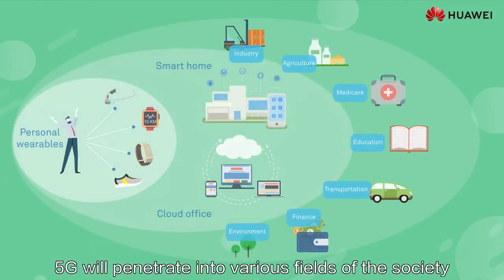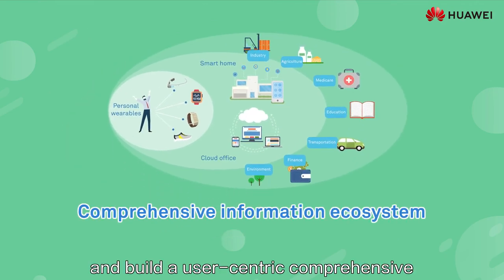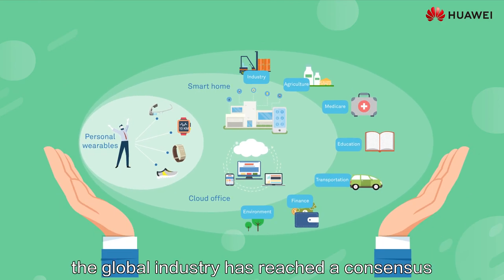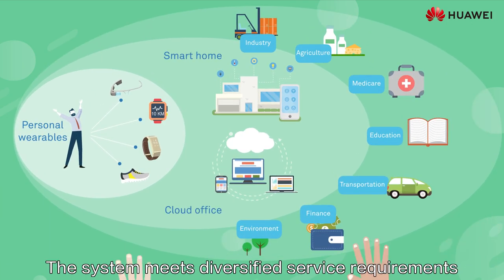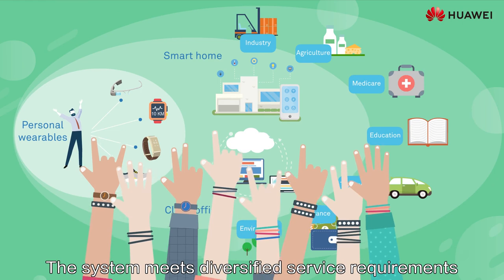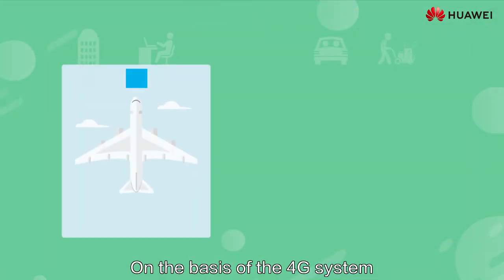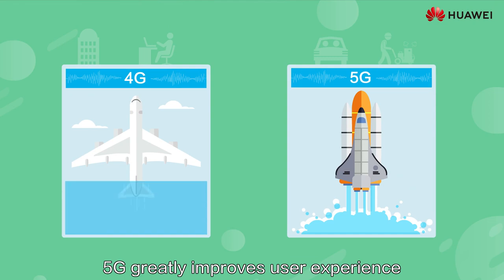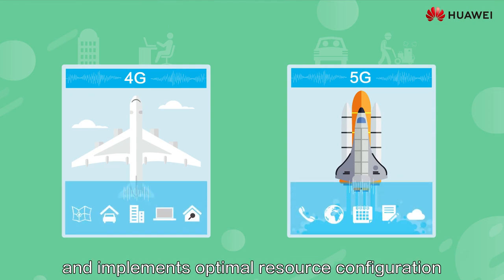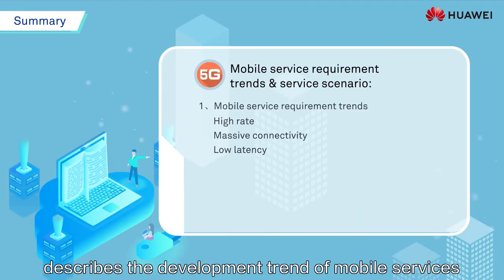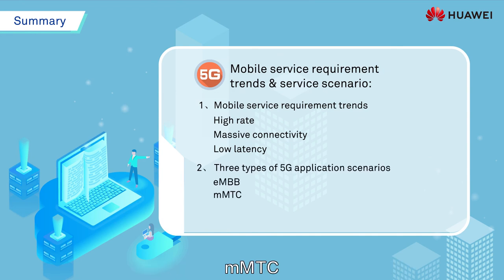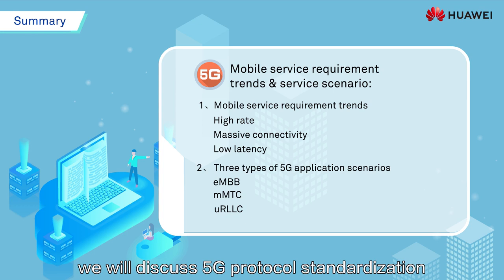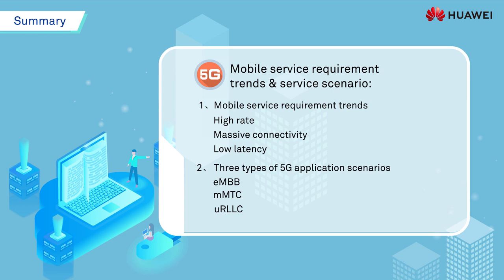5G will penetrate into various fields of society in the future and build a user-centric comprehensive information ecosystem. Currently, the global industry has reached a consensus on the characteristics of the 5G system. The system meets diversified service requirements and applies to multiple scenarios. On the basis of the 4G system, 5G greatly improves user experience and implements optimal resource configuration. This lesson describes the development trend of mobile services and three types of 5G service scenarios – eMBB, mMTC, and URLLC. In the next lesson, we will discuss 5G protocol standardization and deployment progress.